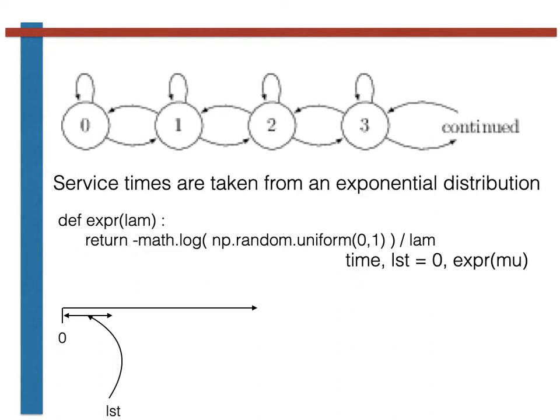We can now write the code to simulate the arrival times of the other customers. This code is shown here. Remember that the other customers' arrival times are given by a Poisson process with parameter lam. Furthermore, the times between arrivals in a Poisson process are all exponential random variables with parameter lam. To generate these arrival times, we thus use this simple code.